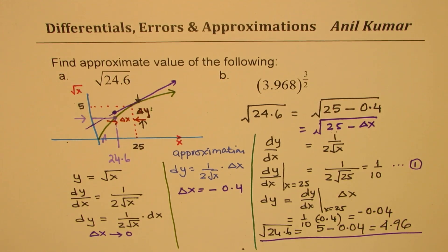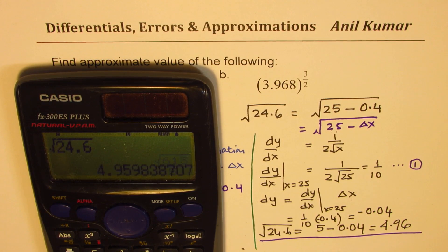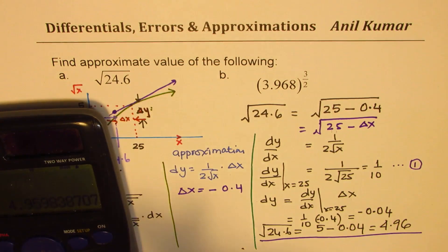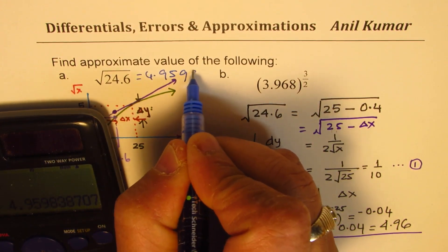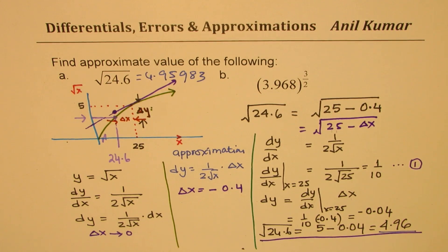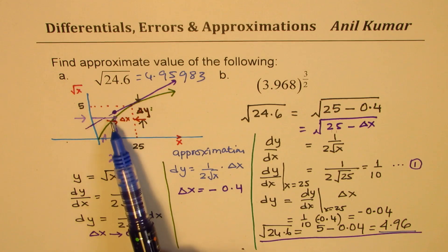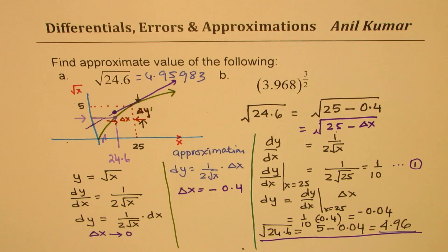Now, if you use the calculator, let's calculate and figure out what is the square root of 24.6. In decimals, it is basically equal to 4.9598 — something like this. So our value of 4.96 is fairly accurate. You can see that we got just 0.001 above this, so you can actually calculate the error here, which is very small.